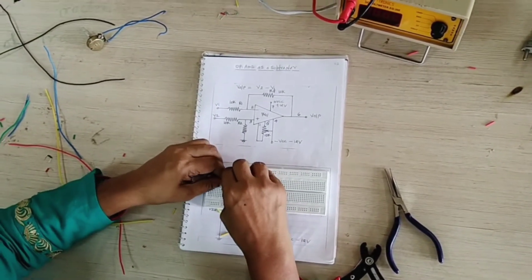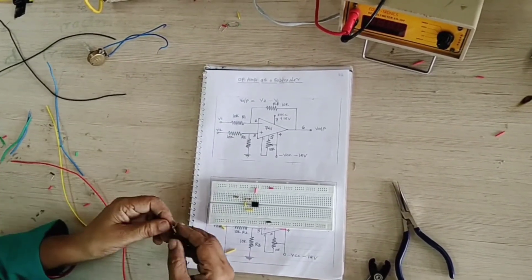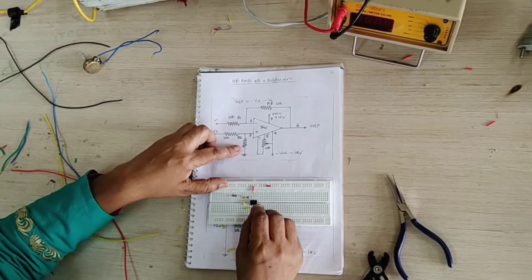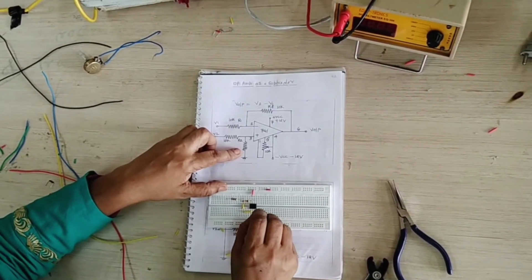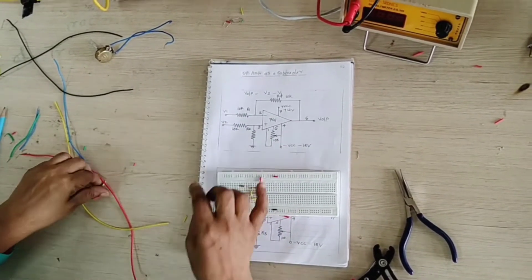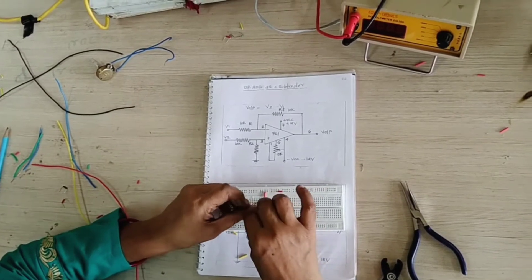Now come to the pin number 3. Pin number 3 is here one resistor 10k is ground. 1, 2, this is 3 to 10k ground directly and another resistor R2 your V2. So we are connecting R2 is your V2.